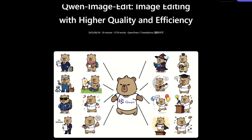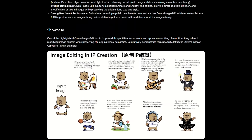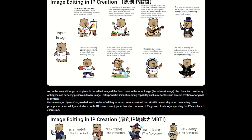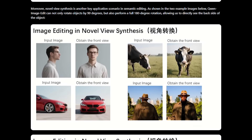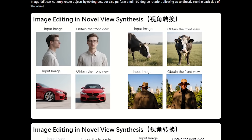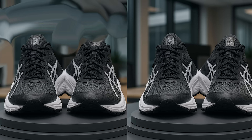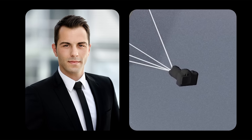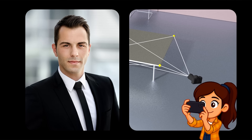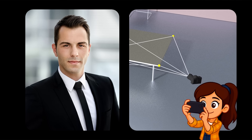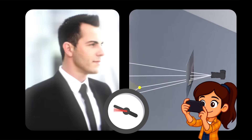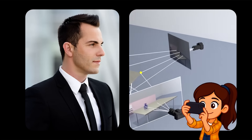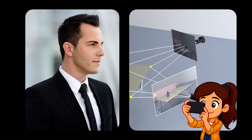Quen is a new AI model released by the Alibaba team. What it does is quite unique — it creates a new camera angle from a single still photo without deforming the subject, ruining the lighting, or making the background look artificial. For example, you upload a frontal photo and simply instruct: rotate camera 45 degrees to the left. You wait a few seconds and receive a brand new photo, as if the camera physically moved to the left of the subject.